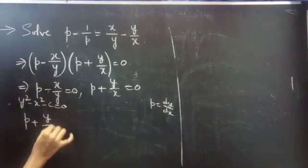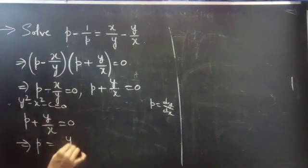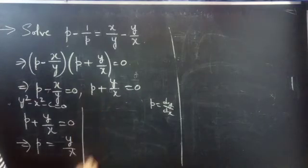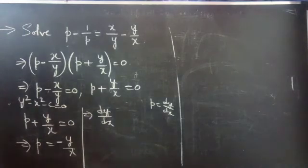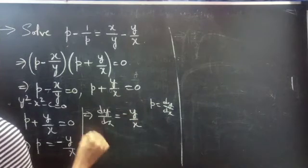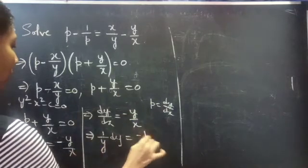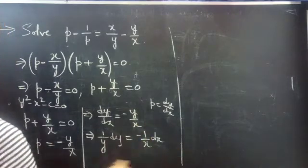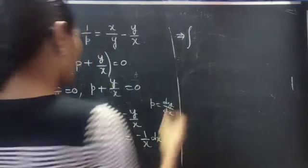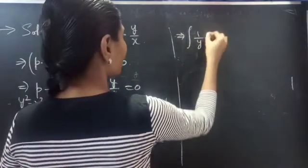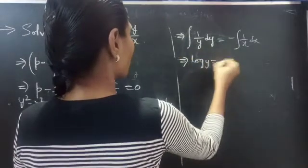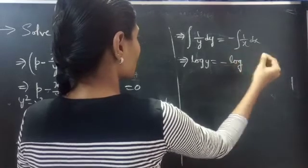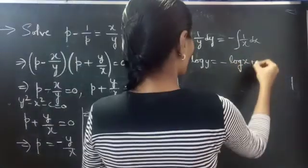For the second case: P plus y/x equals 0, so P equals minus y/x. Substituting P equals dy/dx: dy/dx equals minus y/x. Separating variables gives (1/y) dy equals minus (1/x) dx. Since variables are separable, integrate both sides: integral of (1/y) dy equals minus integral of (1/x) dx. This gives log y equals minus log x plus log c.